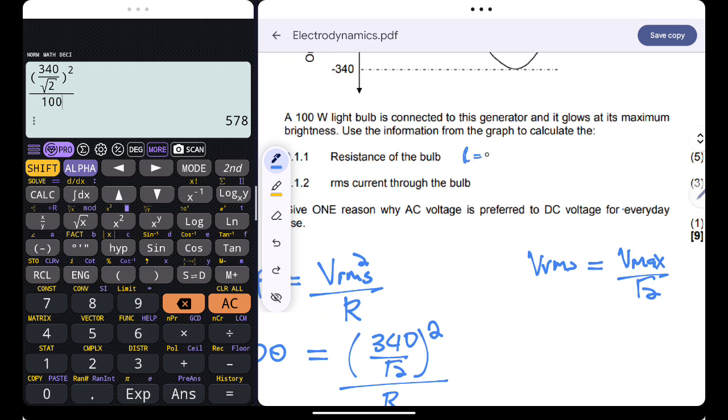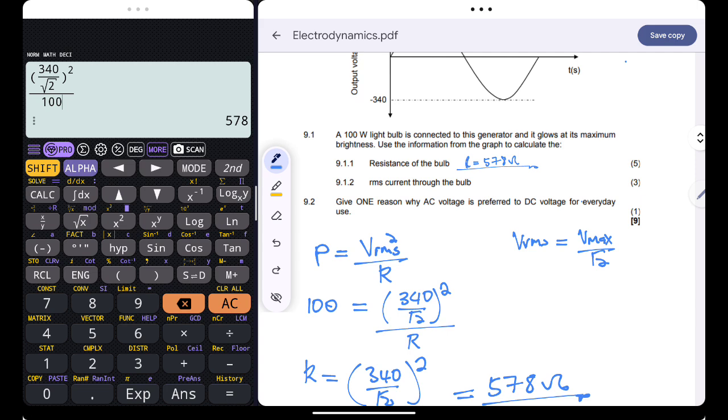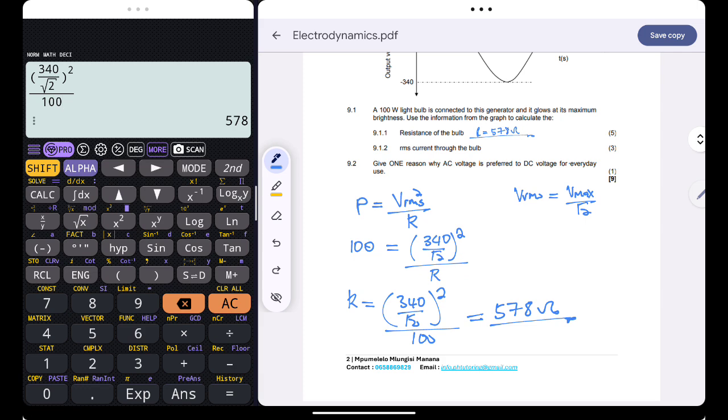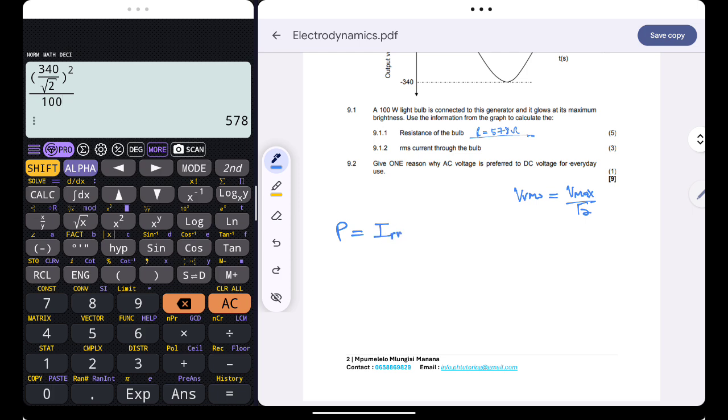Now they want us to calculate the rms current. We can simply use the power equation. You can say power P average is equal to I_rms squared multiplied by R. So this will just be equal to 100 equals I_rms squared multiplied by 578.